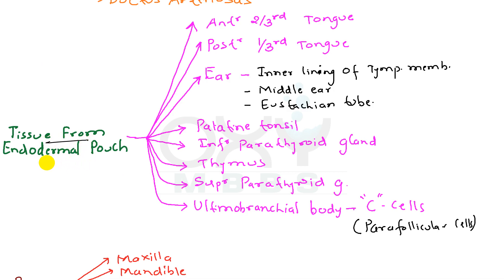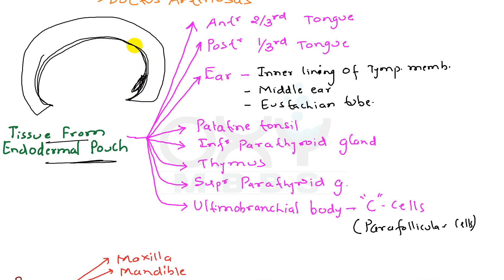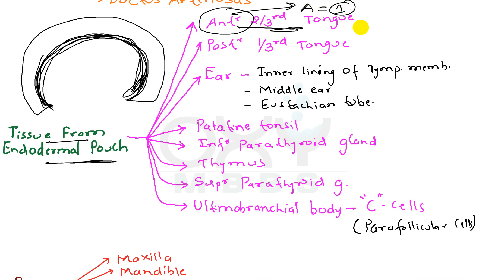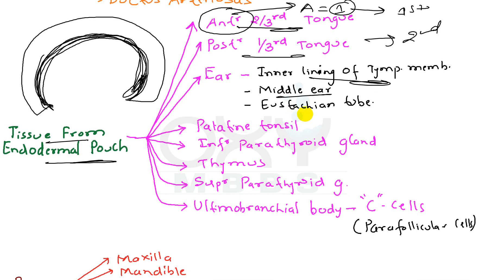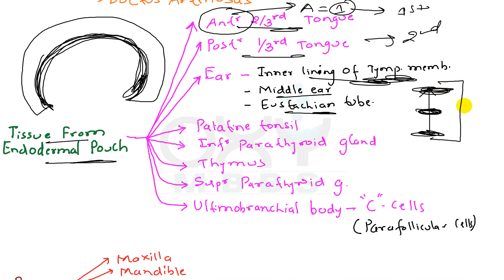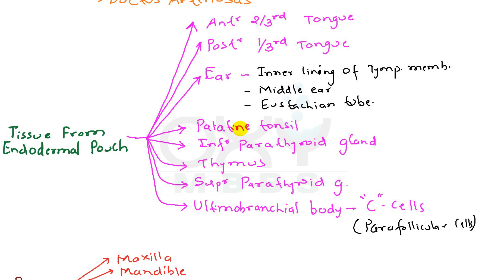Now coming to tissues derived from the endodermal pouch. The inner part of the pharyngeal arch is the pharyngeal endodermal pouch. From this pouch, the anterior two-thirds of the tongue is derived — 'anterior' A means number one, so it comes from the first pharyngeal arch. The inner lining of the tympanic membrane, middle ear, and eustachian tube are also all derived from the first pharyngeal arch.